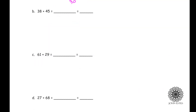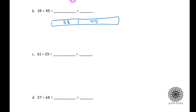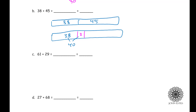Now let's practice addition. In part B we have 38 plus 45. I draw a tape diagram with 38 and 45. I have the option to make one of these a multiple of 10 — I pick the one closest to a ten, which is 38. I move two over to make 38 into 40. It's like moving two people out of the room of 45 over to the room of 38, leaving 43. So instead of 38 plus 45, I now say 40 plus 43, and I can easily see that equals 83.